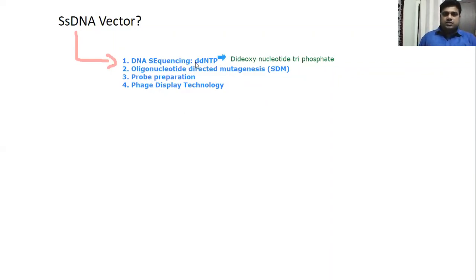There is oligonucleotide-directed mutagenesis, also called site-directed mutagenesis - mutation at a particular site or nucleotide region. Third is probe preparation, which also requires single-stranded DNA. Fourth is phage display technology, which is equally important and used by researchers, where protein is expressed on the outer surface if tagged.